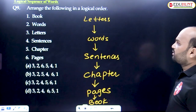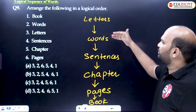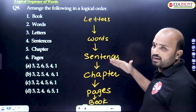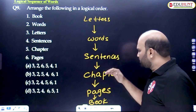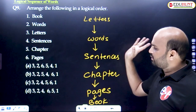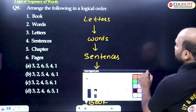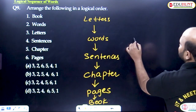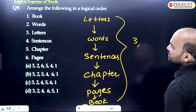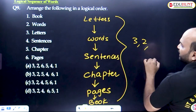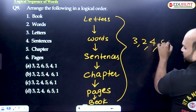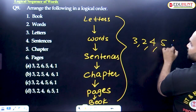Combination of letters is called words, words combined are sentences, combination of sentences are chapters — actually a paragraph is called a chapter — chapters are called pages, and pages are called books. So first one letters is third, next words is second, next sentences is fourth, next chapters is fifth, pages is sixth, and last book is one.